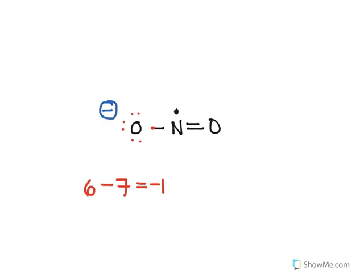Last but not least, we'll take a look at this nitrogen over here. This nitrogen is supposed to have 5 electrons, but we see that it has 1, 2, 3, and this one lone electron over here — that's 4 electrons. 5 minus 4 is plus 1, so this nitrogen has a plus 1 formal charge. And that's really all there is to it.